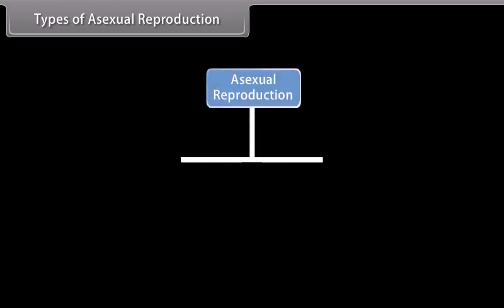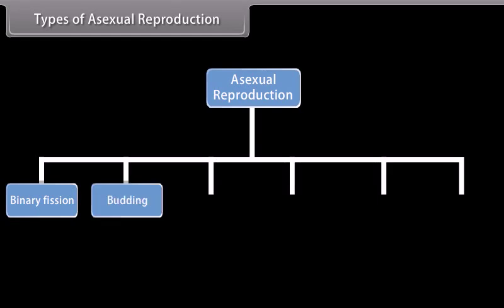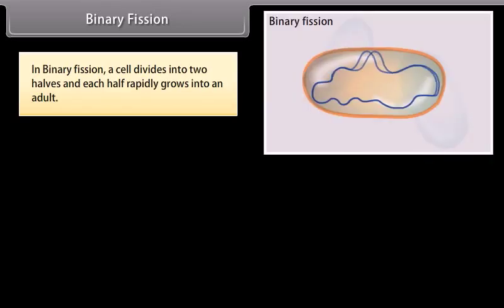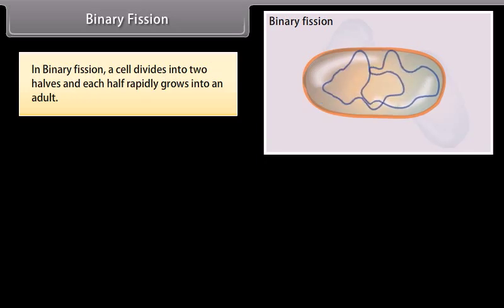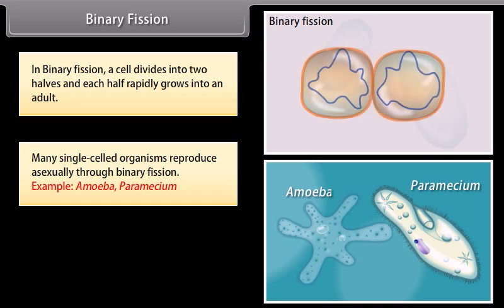Types of asexual reproduction. Do you know how organisms reproduce asexually? An organism may reproduce asexually by binary fission. In binary fission, a cell divides into two halves, and each half rapidly grows into an adult. Many single-celled organisms reproduce asexually through binary fission.